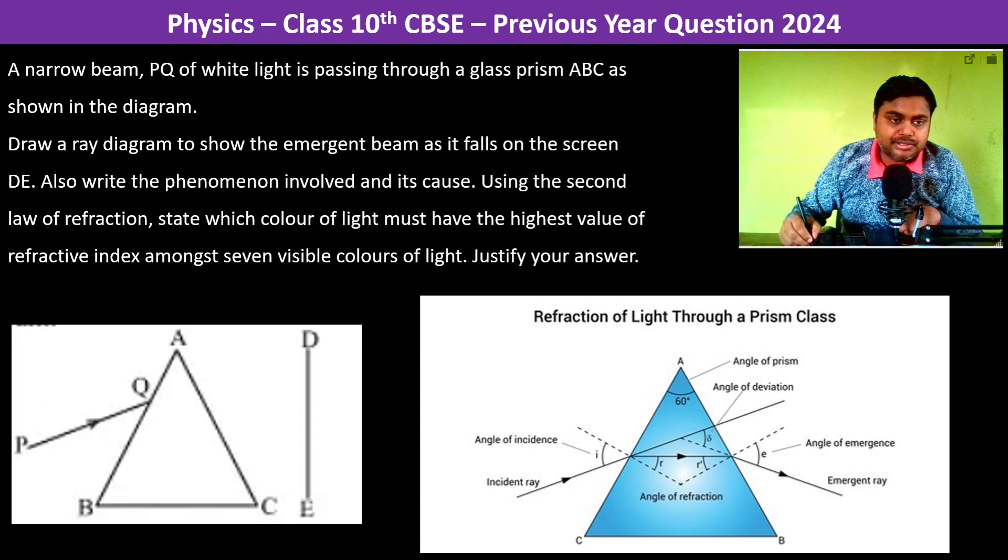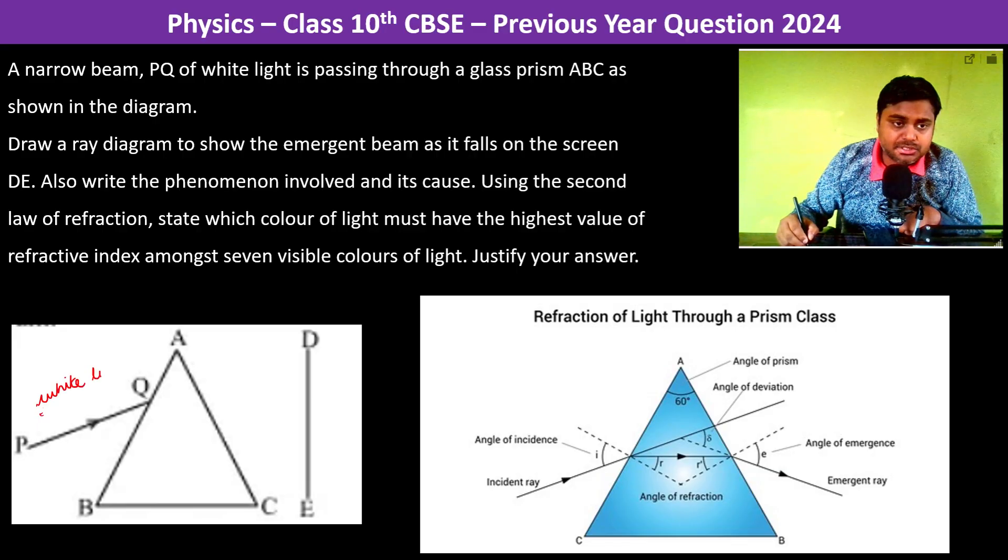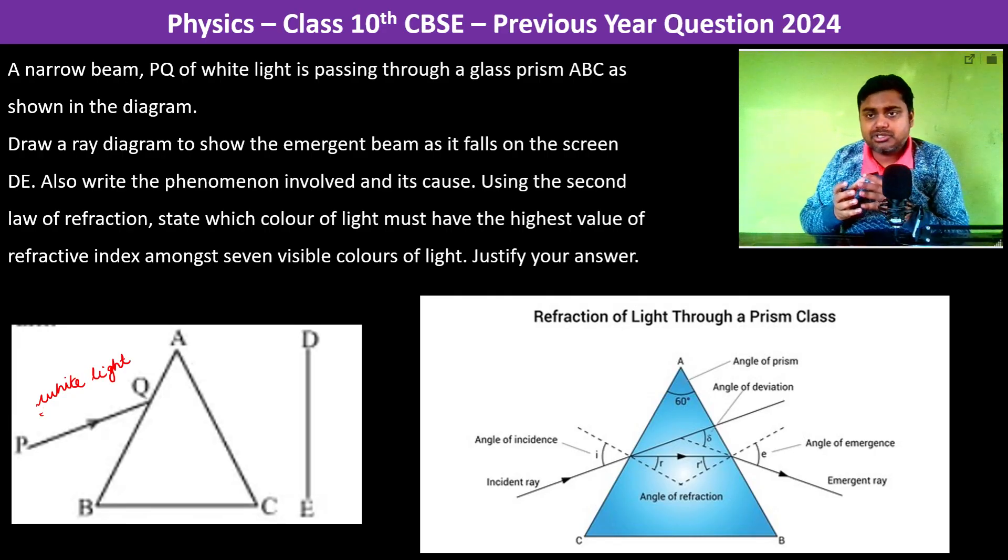So this is the incident white light. Since it is white light, it means that it is the combination of different wavelengths. It is having all the wavelengths within itself.